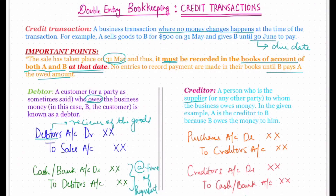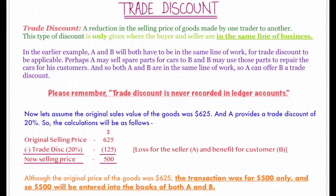The entries at the time of purchase will be recorded in the books of the customer: Purchase Account debit, because purchase is an expense as per the nominal rule, and Creditors Account credited, as per the personal account rule — credit the giver. At the time of payment: Creditors Account will be debited because they are the one we are paying to, and Cash or Bank Account will be credited because money is going out of the business.